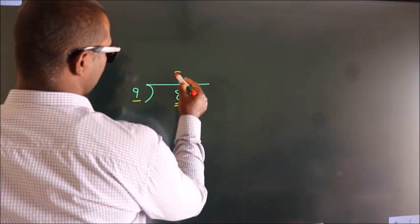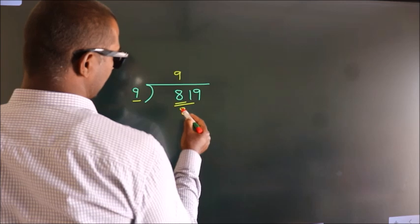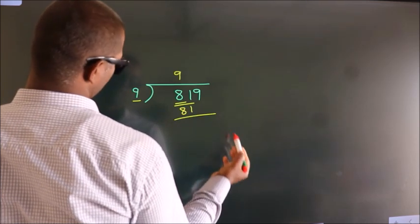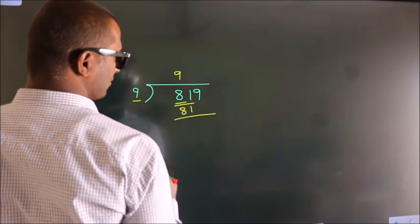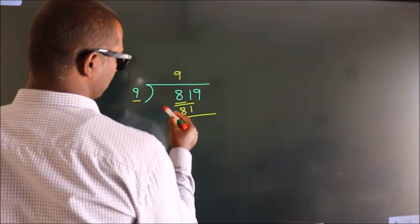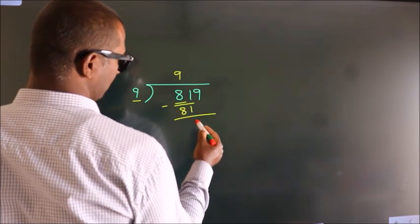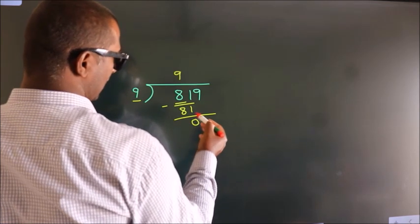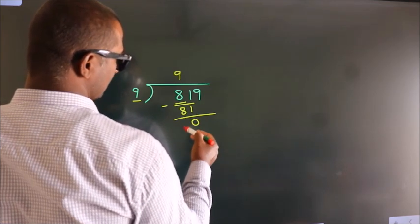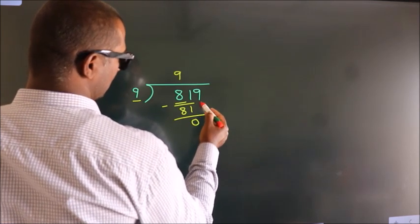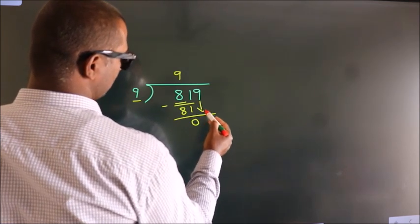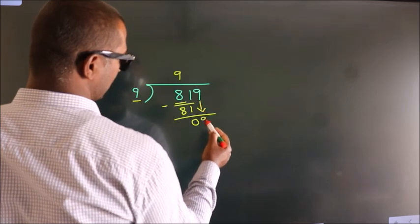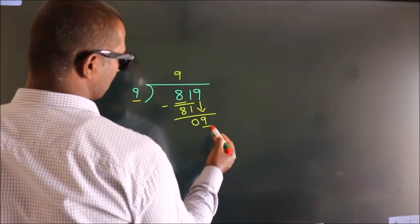9 nines are 81. Now we subtract, and we get 0. After this, bring down the beside number — bring down the 9, so we have 9.